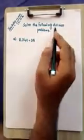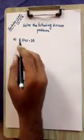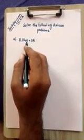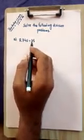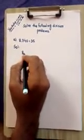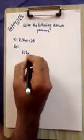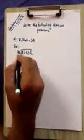Assalamu alaikum dear students, welcome to YouTube online class, class 4AB. Today we will discuss and solve deviant (long division) problems. In question number A, there is given eight thousand seven hundred forty divided by thirty five. We write first: Solution. In deviant way: 8740 divided by 35.